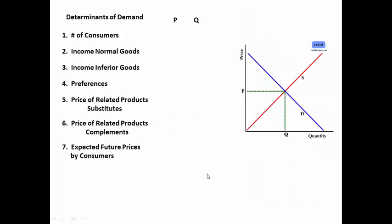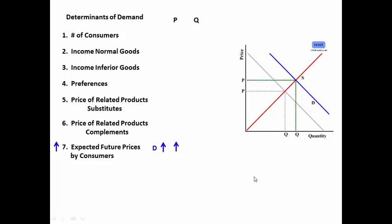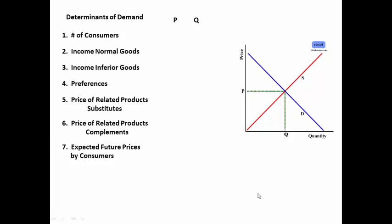Number seven: expected future prices by consumers. If people expect the price to go up in the future, they want to buy now. This causes demand to increase. As demand increases, this drives up the price and drives up the quantity. So what drives up the price is people's expectations about the future. If people think that prices are going to go down in the future, then they don't want to buy the product now — they want to buy it later.